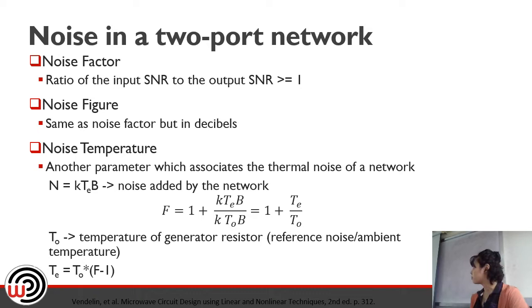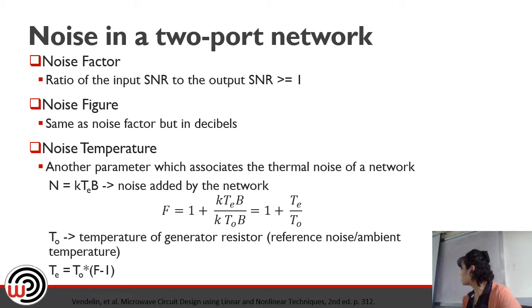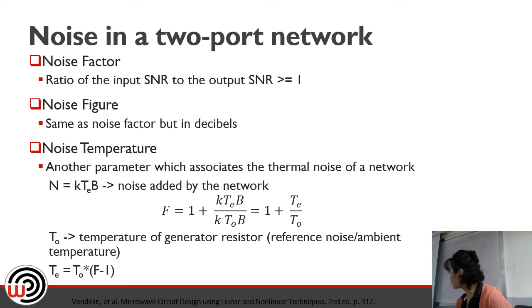The noise factor is the ratio of the SNR at the input to the SNR at the output, and it is always greater than one. The noise figure is the same as the noise factor but expressed in decibels, though some use both terms interchangeably. For noise temperature, the noise power is equal to k times the noise temperature times the bandwidth of the signal.